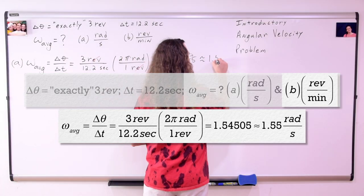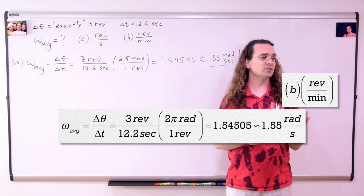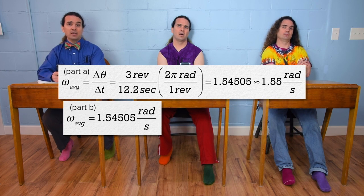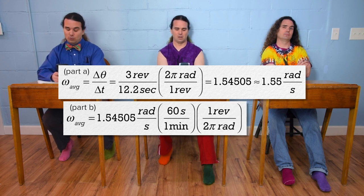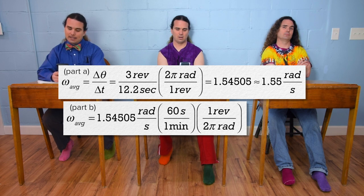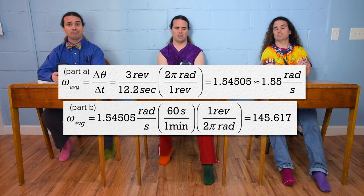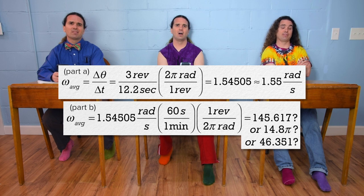Billy, could you please do part b? Please convert the angular velocity from radians per second to revolutions per minute. Well, we can multiply the angular velocity by 60 seconds over one minute to convert to minutes, and multiply by one revolution over 2π radians to convert to revolutions. And that is 145.617 or, wait, actually that doesn't make any sense. I got 14.8π. Actually, it's 46.351.